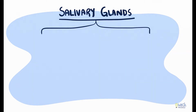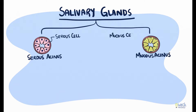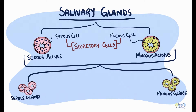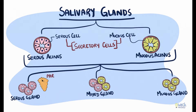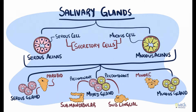Salivary glands are also classified based on the type of secretory cells they possess. Serous and mucous cells are the secretory cells of the salivary gland. Hence salivary glands are also classified as serous, mucous, and mixed salivary glands — those glands that possess both serous and mucous cells. Parotid glands are serous glands, submandibular glands are mixed but predominantly serous, and sublingual glands are also mixed but predominantly mucous. The majority of the minor salivary glands are mucous, except for von Ebner's glands which are serous glands.